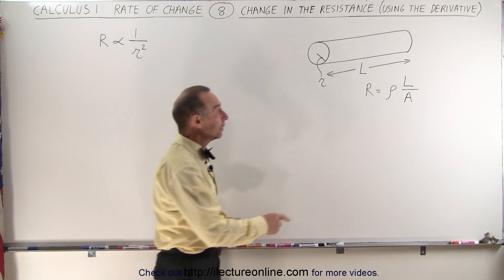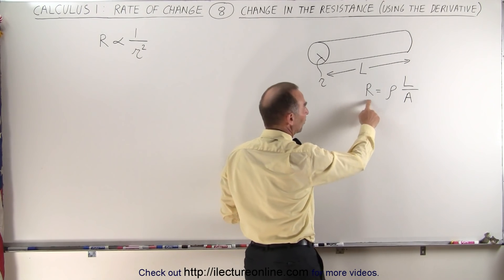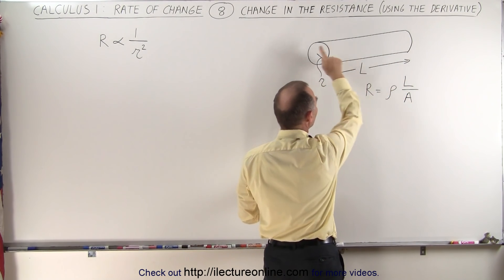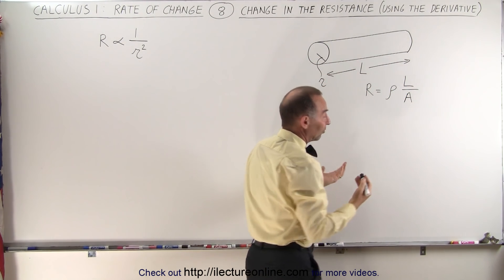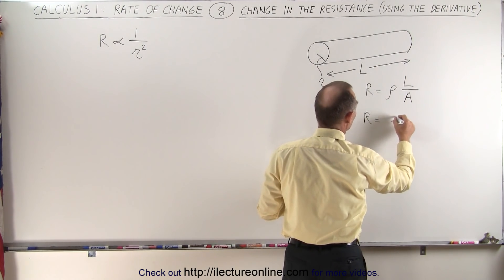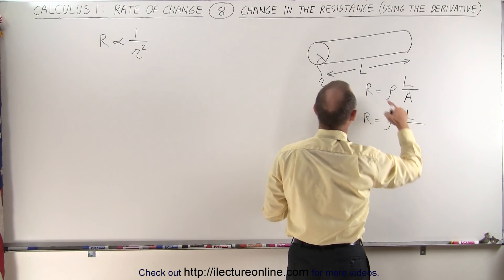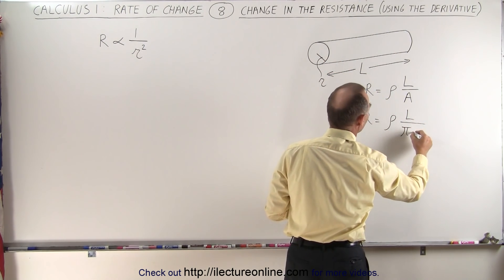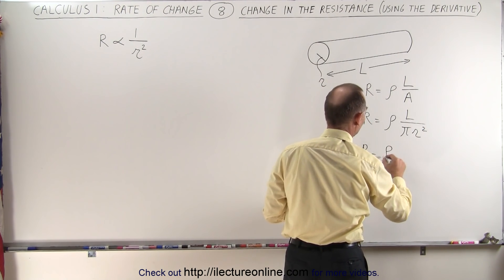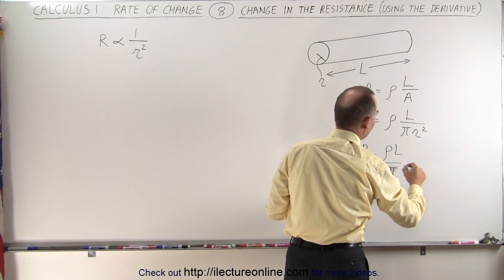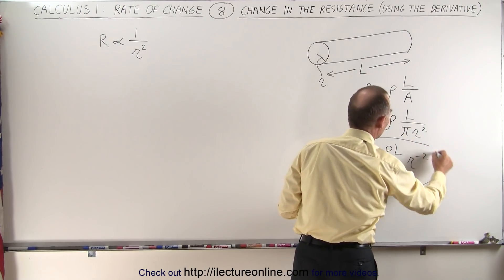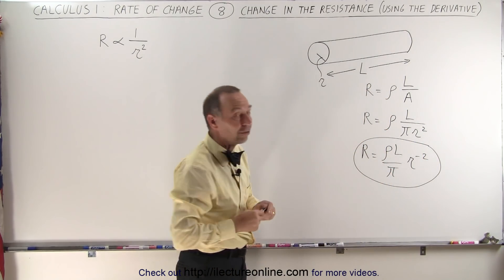Why is that? Well, the equation for the resistance is that it's equal to the resistivity of the material times the length of that object, divided by the cross-sectional area. And since the cross-sectional area can be written as pi r squared, we can say that R is equal to the resistivity times the length divided by pi r squared, or equivalently, rho times L divided by pi times r to the minus 2 power. So this is one way in which we can write the resistance as a function of the radius.